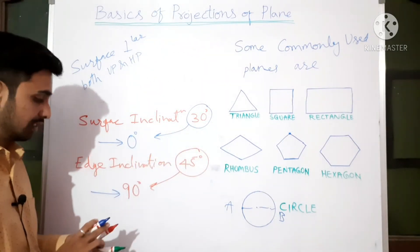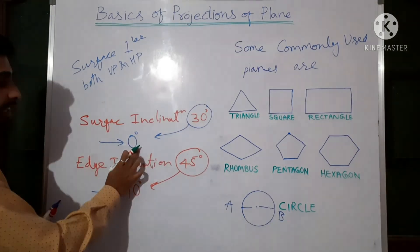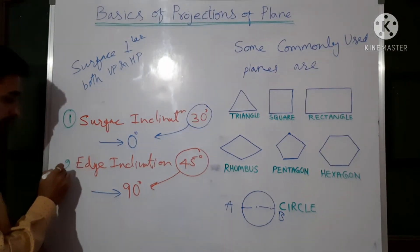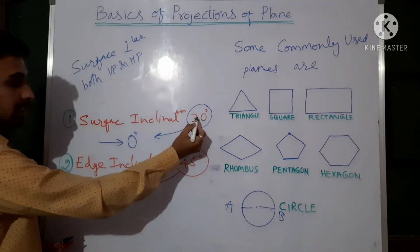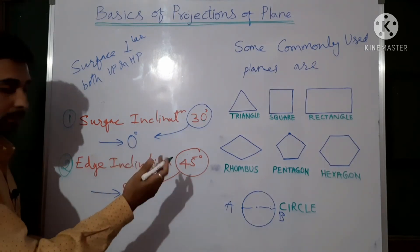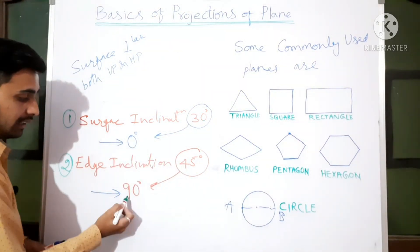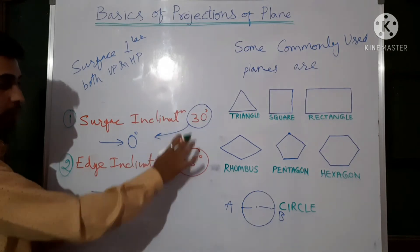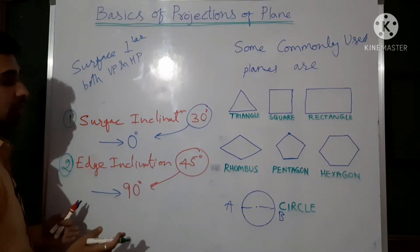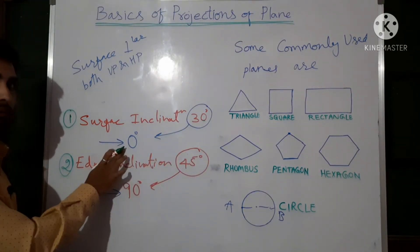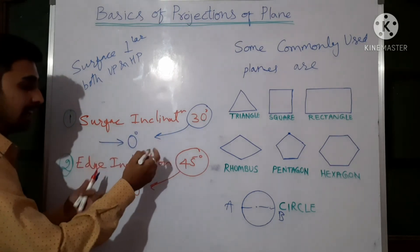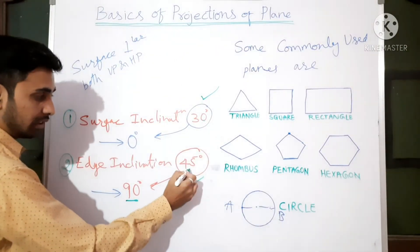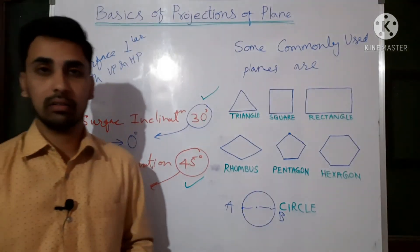After making the assumptions, we then restore the original angles. The rule is: restore surface angle first — for example, change 0 back to 30 degrees — then in the next step restore the edge angle, for example back to 45 degrees. So: surface first, edge second. These are the basic principles for solving projection of planes problems.